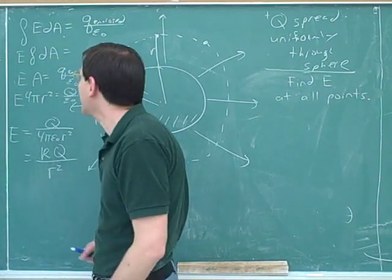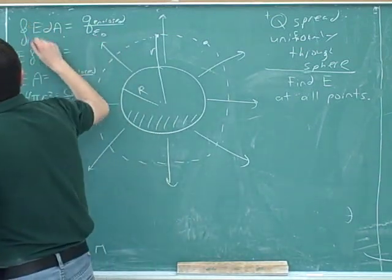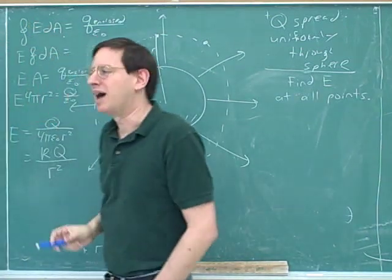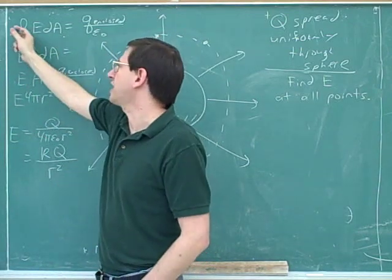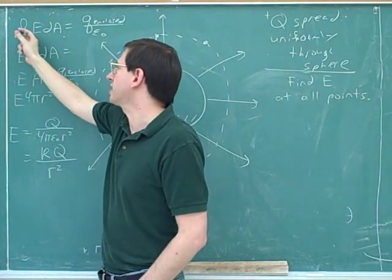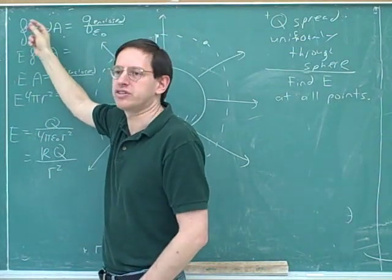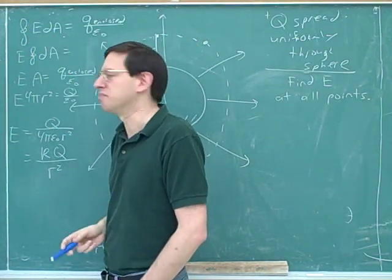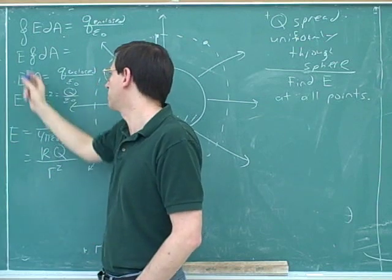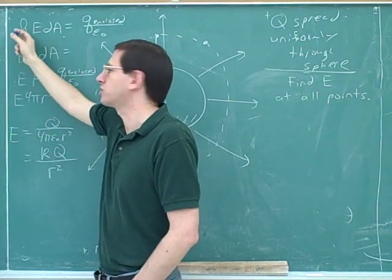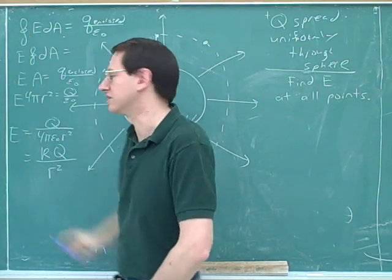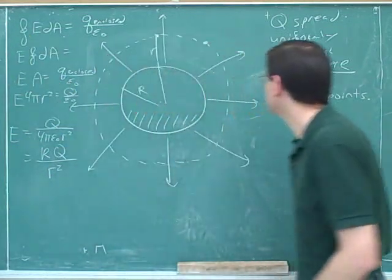Before we forget — this integral is usually written with a little circle on the integral sign. That circle just indicates that we're integrating over a closed surface. It's just a notation technicality, but instructors will write it this way to show we're integrating over the closed Gaussian surface.